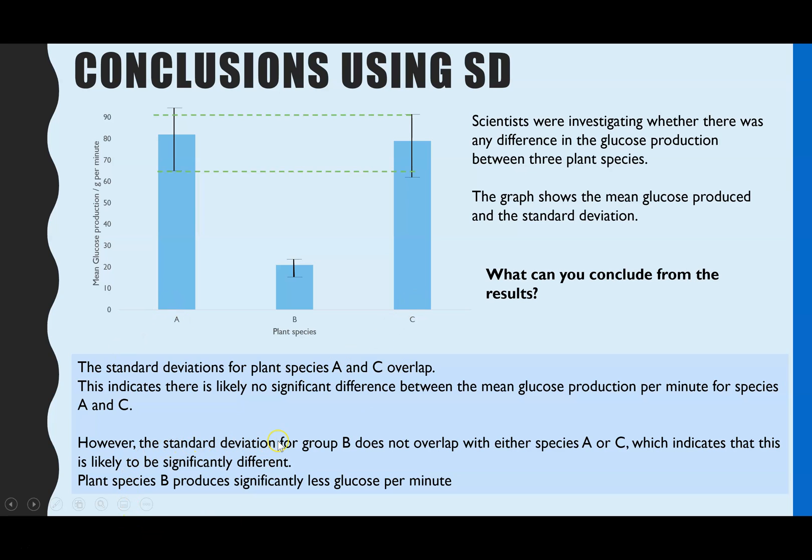So this indicates that it's likely there is no significant difference between the mean glucose production per minute for species A and C. However, the standard deviation for group B does not overlap with other species. So it doesn't overlap with A or C. And that indicates that it's likely to be significantly different. Now the final thing I've added is just give a bit more detail and we can see it is significantly lower. So sometimes the AQA mark scheme does require you to point out is it significantly higher or is it significantly lower.